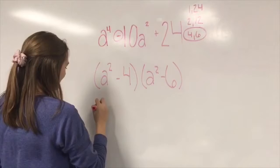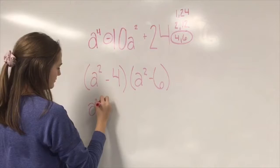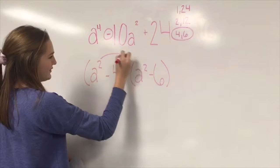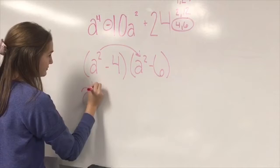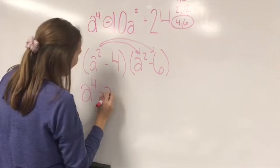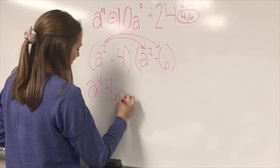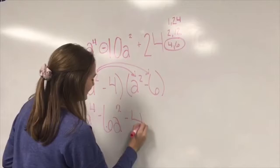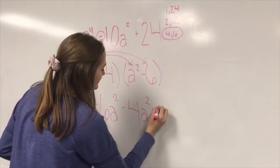But to make sure, I'm going to check my work. Okay, I made a few mistakes, but I go back and fix them. I'm factoring now. So, I multiply a squared times a squared, get a fourth. Then a squared times negative 6 is negative 6 a squared, and negative 4 times a squared is negative 4 a squared. And then negative 4 times negative 6 is 24.